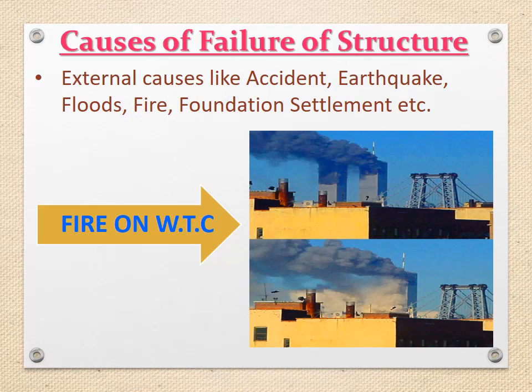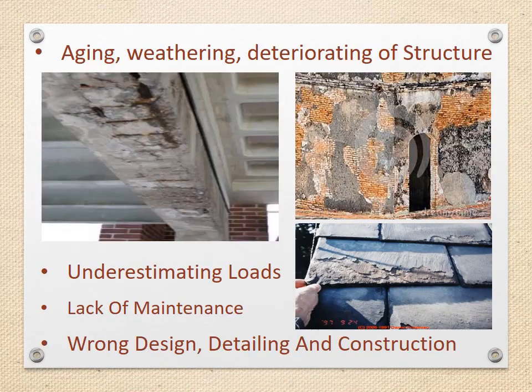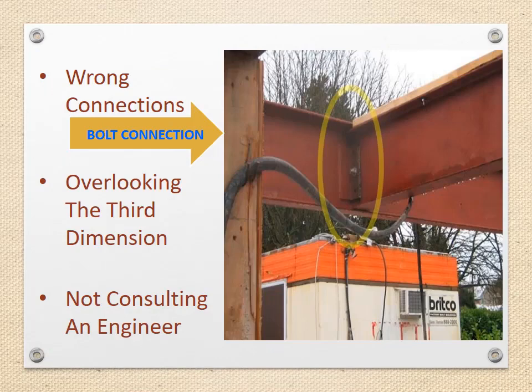A massive destruction also occurred during the Nepal earthquake in 2015, which may need rehabilitation. Second, aging, weathering, and deterioration of structure. Third, underestimating loads. Fourth, lack of maintenance. Fifth, wrong design detailing and construction. Sixth, wrong connections in steel structures. Seventh, overlooking the third dimension.